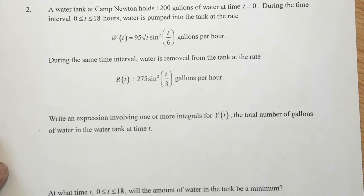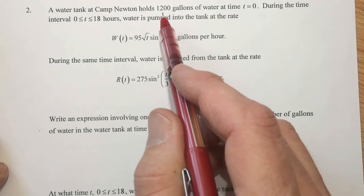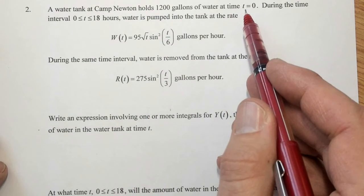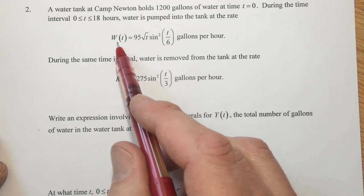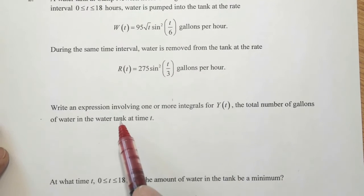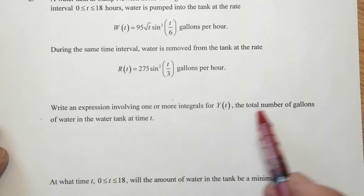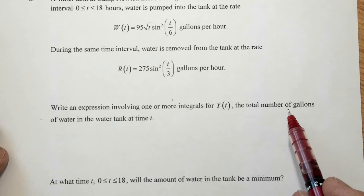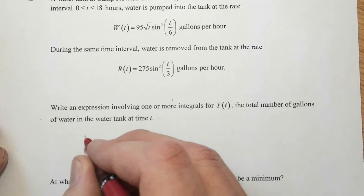All right, similar idea with number 2, except we have two rates happening. Water tank in Camp Newton, 1,200 gallons at the initial time value. And we have water being pumped into the tank at W(t) and water removed from the tank at R(t). We want to write an expression involving one or more integrals because you can do this all in one or you can do it in more than one for Y(t), which is the total amount of gallons of water in the tank at any time T. So here we go.